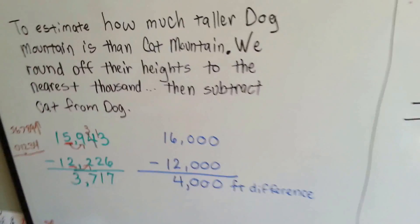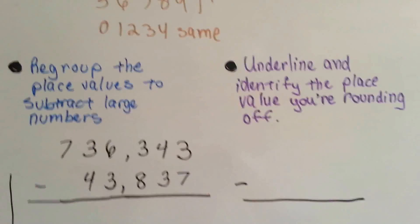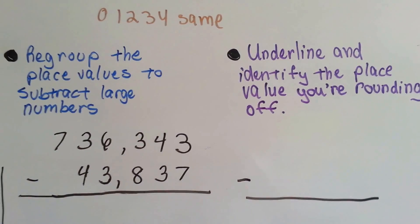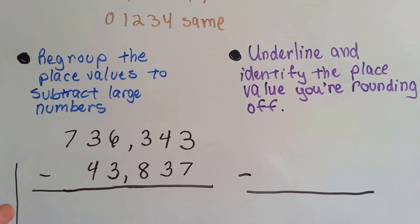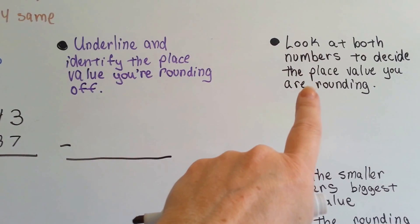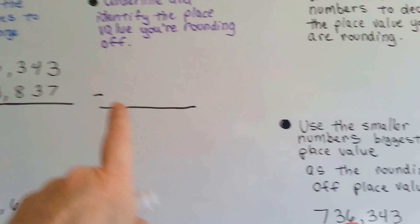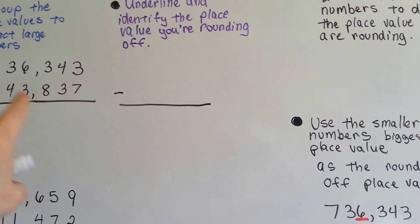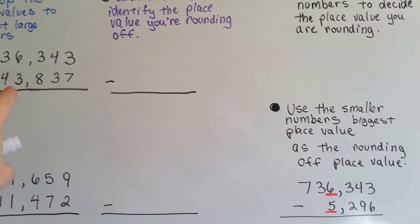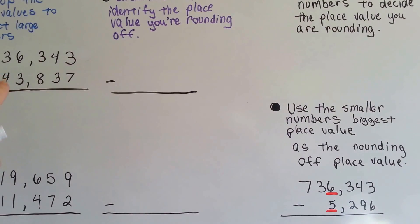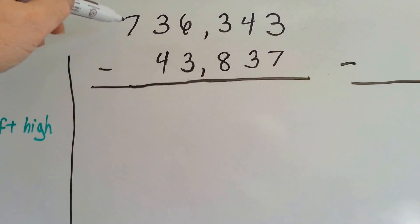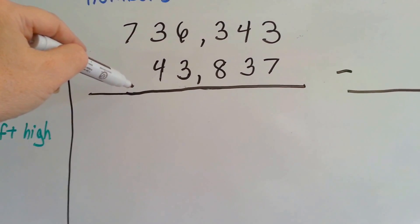Now what we're going to do is we're going to regroup by subtracting, and we're going to do some rounding off and estimating. How do you know which number to round off to? Well, that's very simple. You look at both numbers to decide the place value you're rounding. You use the smaller number. See how 43,000 is smaller than 700,000? You use the smallest number, which would be this one. You use its biggest place value, this place right here, as your rounding off place. We can't round off to the 100,000s because this one doesn't have 100,000s. See?